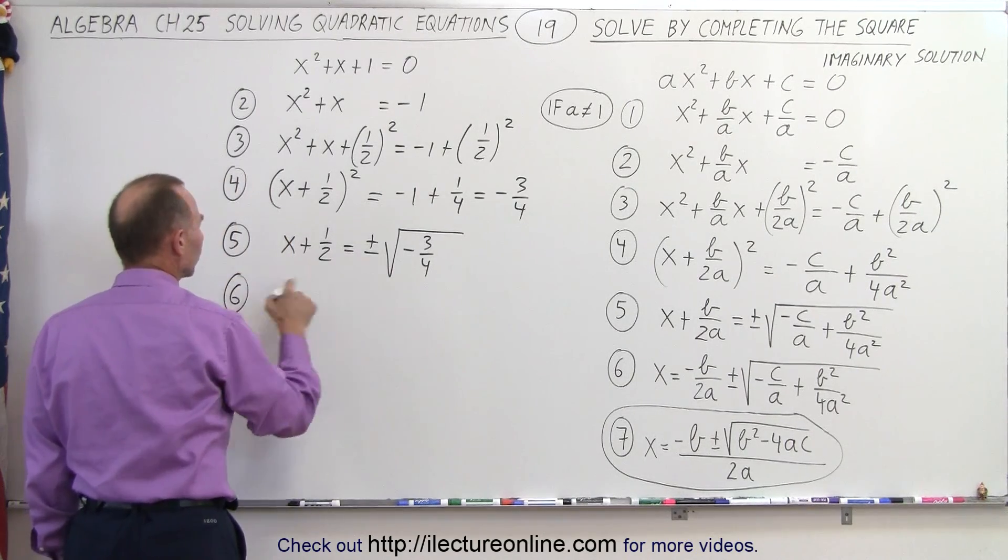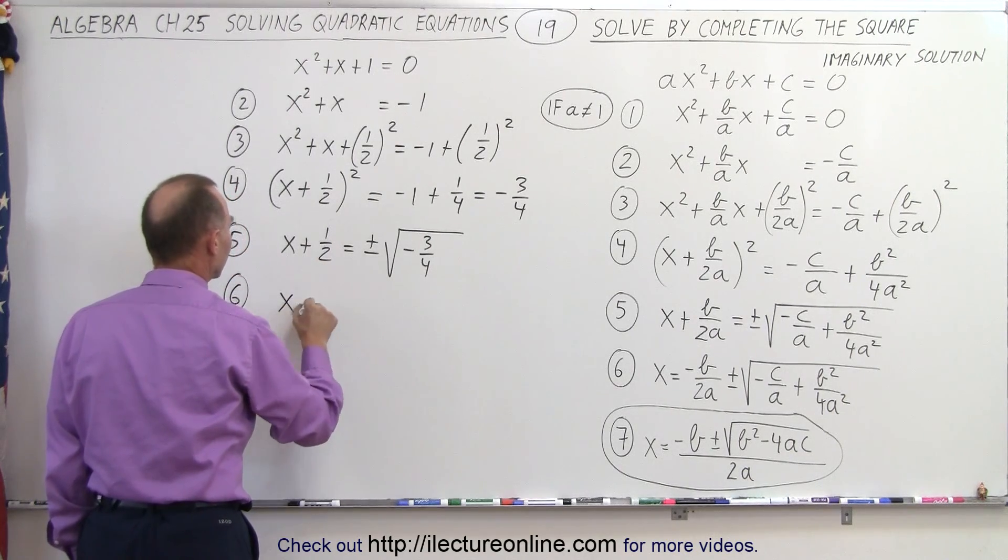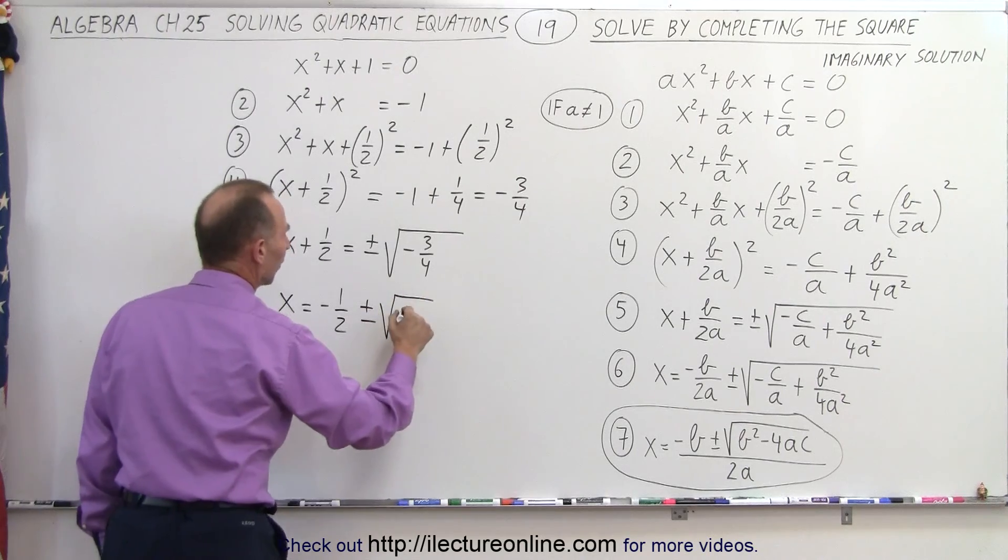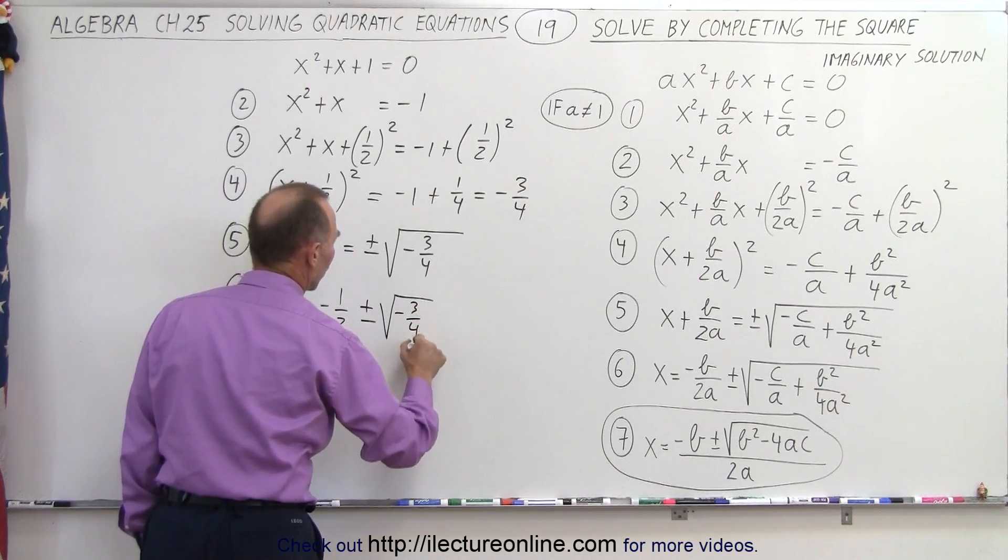Step number 6, we're going to move the constant to the right side. So we have x is equal to minus 1 half plus or minus the square root of negative 3 over 4.